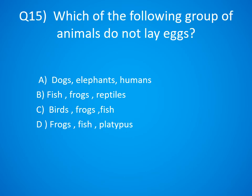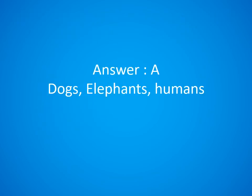Question 15. Which of the following group of animals do not lay eggs? A. Dogs, Elephants, Humans, B. Fish, Frogs, Reptiles, C. Birds, Frogs, Fish, D. Frog, Fish, Platypus. The answer is Option A. Dogs, Elephants and Humans.